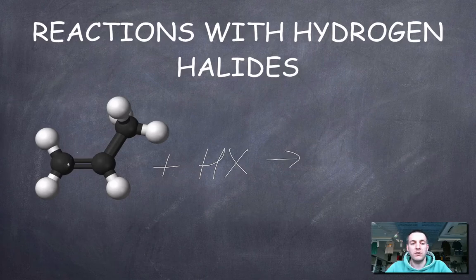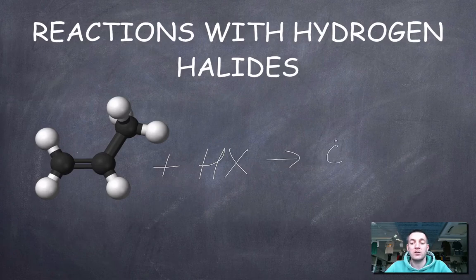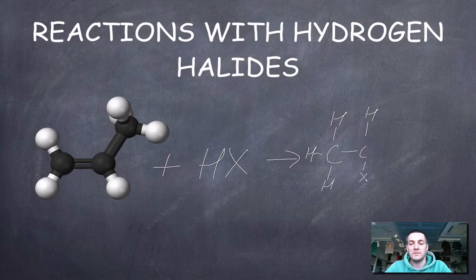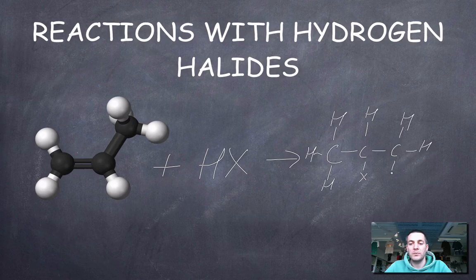But what's going to happen here? Well, these two atoms here are going to get the H and the X. And you might wonder which one gets which. Don't worry about it. You can draw it either way around. So I could either write CH3 because this one got the H and then that would be CHX and CH3 on the end there. Or I could put the H and the X the other way around. I'd get the marks either way.